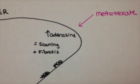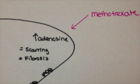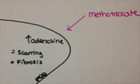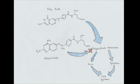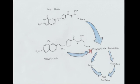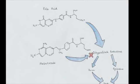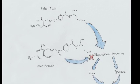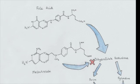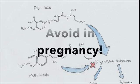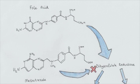Liver damage from taking methotrexate is believed to be due to the build-up of adenosine in the liver. Levels of adenosine are increased by methotrexate and this can lead to fibrosis in the liver over time. However, this effect can be overcome by folic acid. Additionally, birth defects are believed to be due to folic acid deficiency. As methotrexate's mechanism of action utilizes folic acid, it depletes the body's stores of it. Folic acid deficiency has been linked to neural tube defects, and therefore the drug should be avoided in women who are pregnant or seeking to become pregnant.